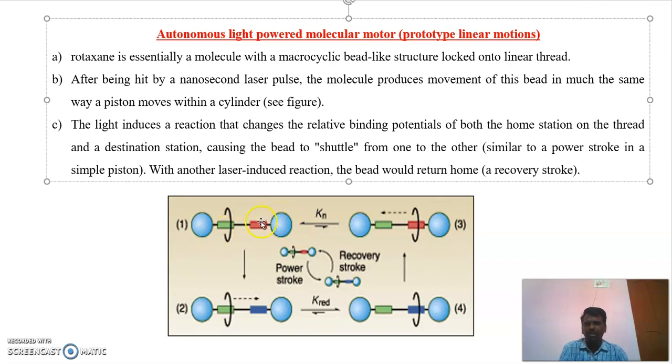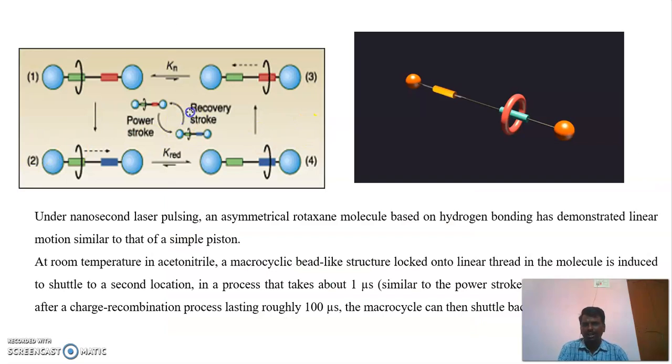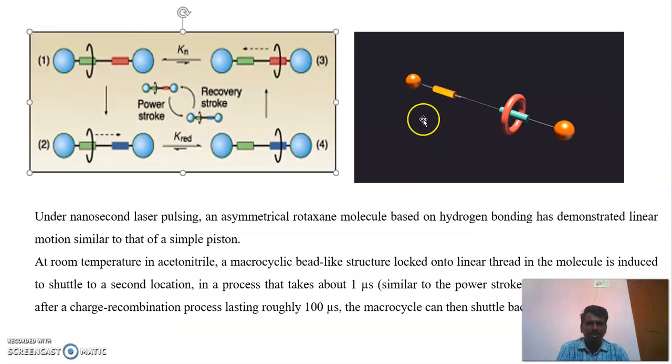When we stop the light source, it returns to its original position. By using light to make this chain move from here to there, this is called an autonomous light powered molecular motor. This animation is an example.